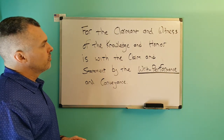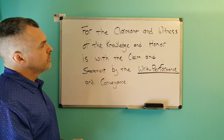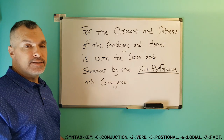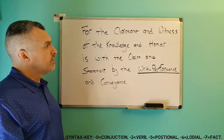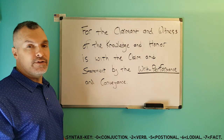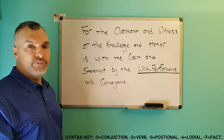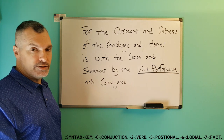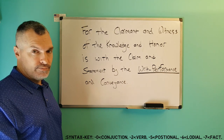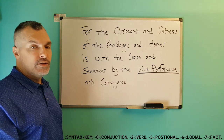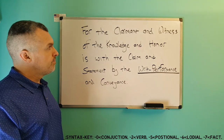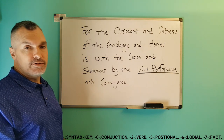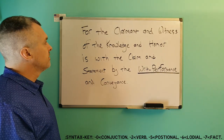Now we're going to use the syntax values of zero, five, six, seven, and two. Zero is conjunction, two is verb, five is positional, six is lodial, seven is fact.